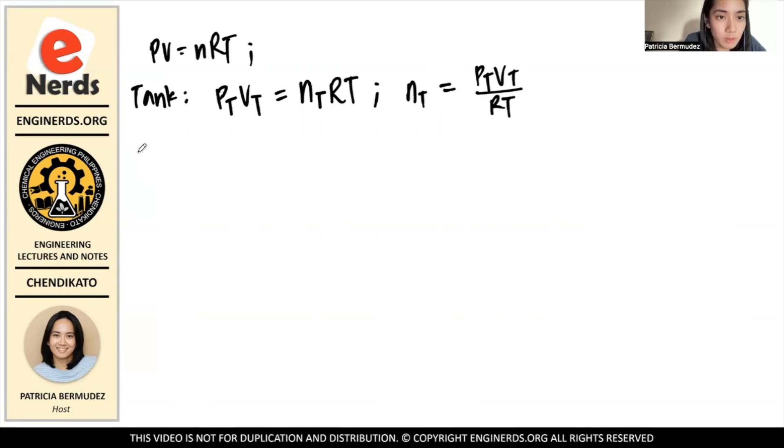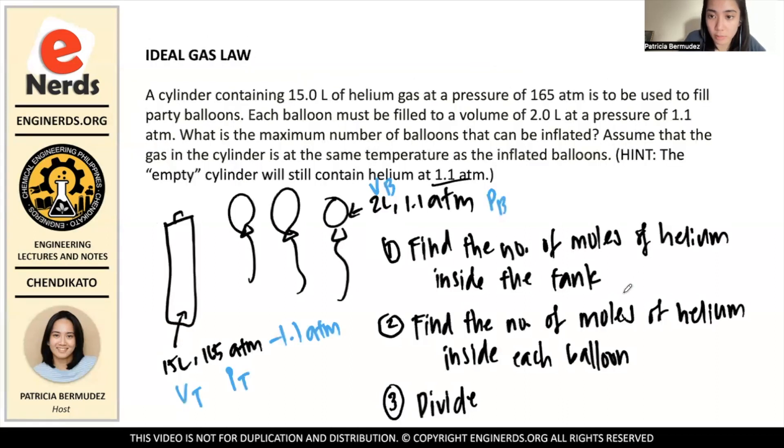And now, for the balloon, for the individual balloons. So, we have balloon, we have pressure of the balloon, volume of the balloon, is equal to the number of moles of each balloon, and then RT. So, calculating for the number of moles inside each balloon, we have NB is equals to PB VB over RT. So, this is step one. This is step two.